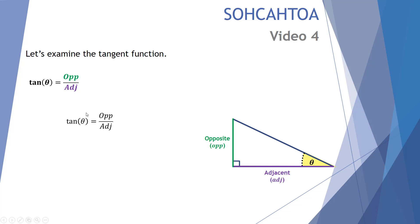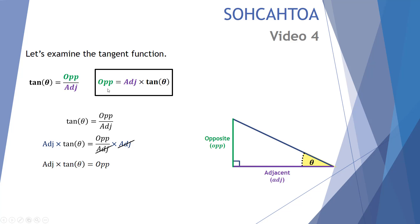Let's do a little bit of manipulation so that we can find equations that allow us to calculate the opposite side length, the adjacent side length, and the angle theta. First, let's multiply both sides of the equation by the adjacent side length. On the right-hand side, the adjacent side length cancels out, leaving us with: the opposite side length is equal to the adjacent side length multiplied by the tangent of the angle theta. That's our first equation to calculate the unknown opposite side length.